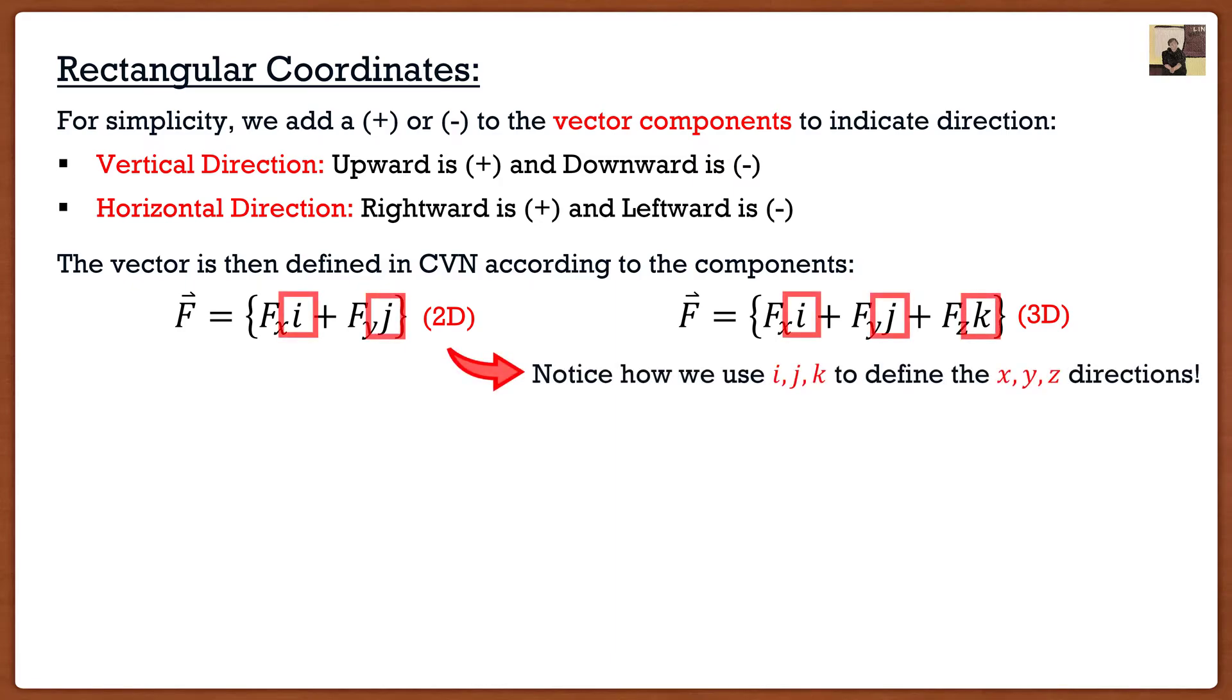So the key here to keep in mind is when we're talking about which directions, we actually use these i's, j's, and k's. We're using i, j, k to define the x, y, z directions. Now why exactly are we doing this? Well, I think it's because we typically use the variable x as a variable. I can't say we're going x in the x direction. It starts to get confusing. So for simplicity, we always use i, j, and k to define the x, y, and z directions respectively.